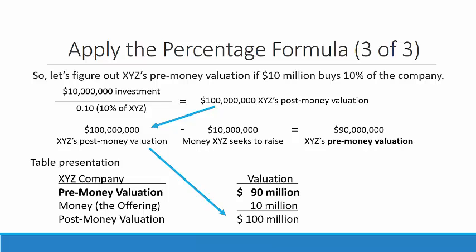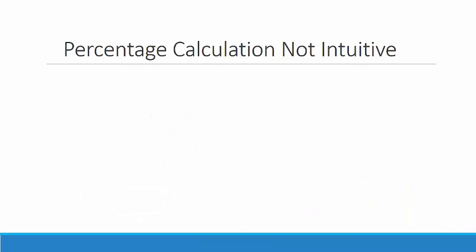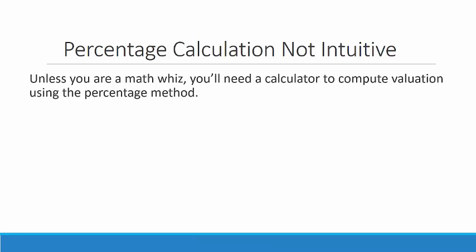Here we can follow where the post-money came from, and see where the money came from, and the pre-money valuation. The ownership split amounts to a proof, because the question is: what is the pre-money valuation if $10 million buys 10% of the company? The percentage calculation is not intuitive. Unless you are a math whiz, you'll need a calculator to compute valuation using the percentage method. If you think you can eyeball it, be careful.